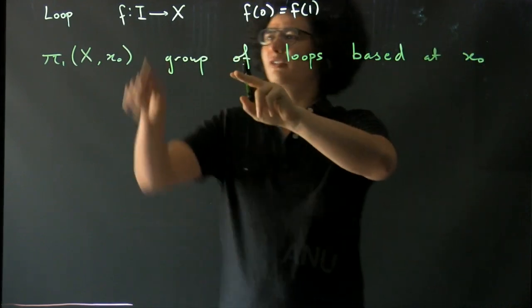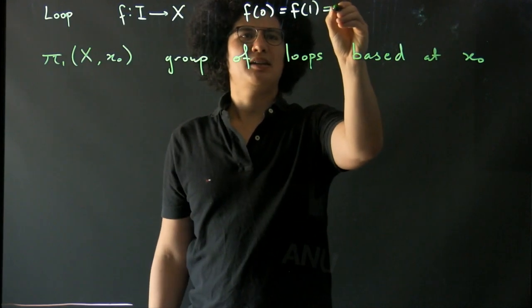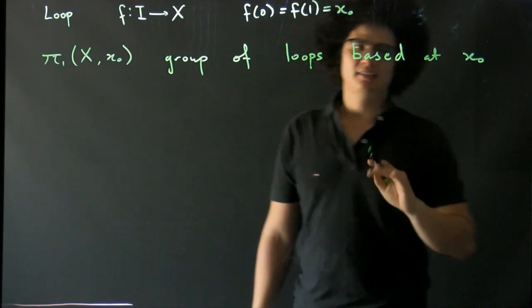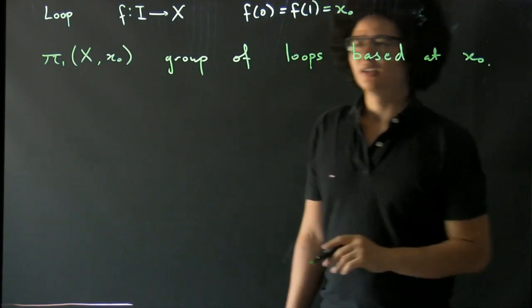Alright, so for a loop to be based at x₀, what we mean is that the point that it starts and ends at is x₀.